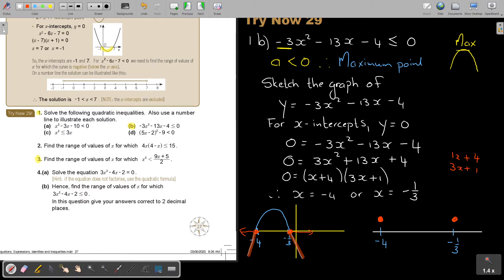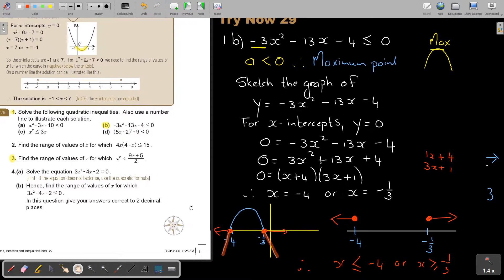I color it in. So, on a number line. It will look like this. So, therefore. If I must write it. X is smaller and equal to negative 4. Or, X is bigger and equal to negative a third. And that is my final answer.